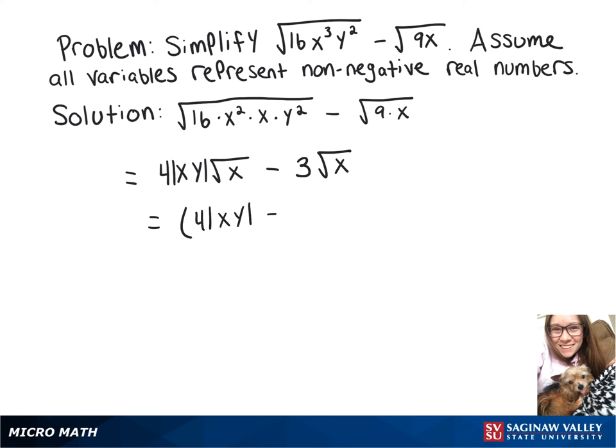So we have 4 times the absolute value of x times y minus 3, all multiplied by the square root of x. And since the directions say that our variables are non-negative, then we can go ahead and remove that absolute value, giving us 4 times x times y minus 3 times the square root of x.